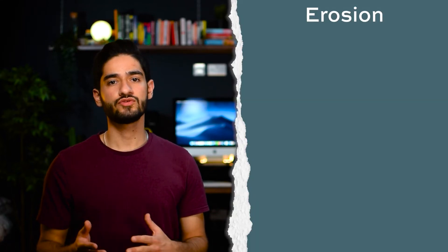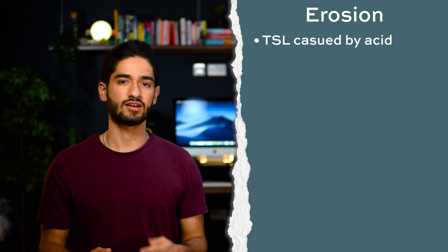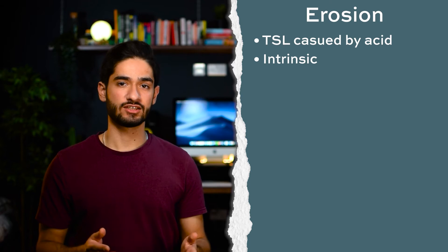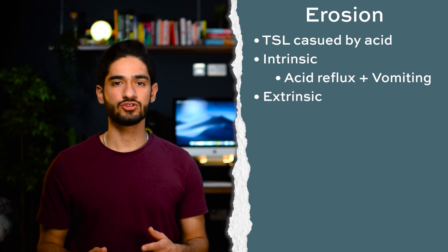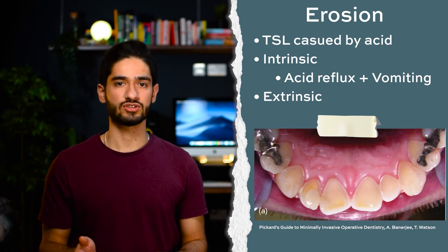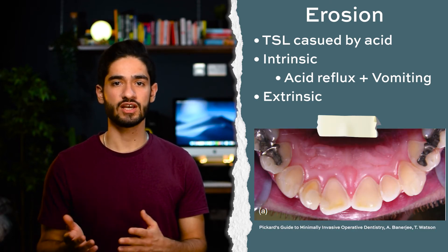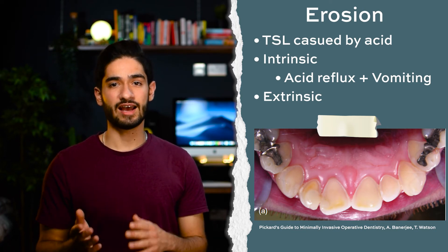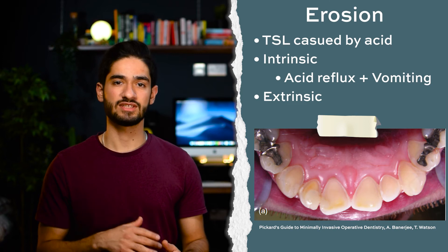The first one is erosion, which is tooth surface loss caused by a chemical process like an acid attack not involving bacteria. There are both intrinsic and extrinsic sources of acid. Intrinsic sources are things like acid reflux or vomiting, and these patients usually present with palatal tooth surface loss on the upper teeth. You don't see much tooth surface loss on the lower molars or the incisors because as they have acid reflux or they vomit, their tongue goes over and protects those teeth.